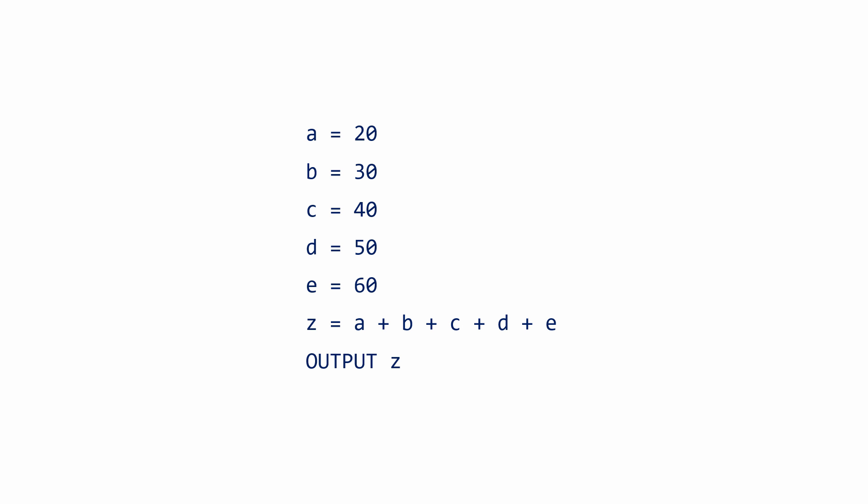A high-level programming language is one that humans can understand easily once they've learned how to code. Can you work out what the output will be? The program puts a number in each of the variables A, B, C, D and E. Then it adds the contents of these variables together and puts the result into another variable called Z. At the end, it outputs whatever is in Z.